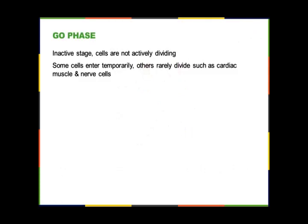G0 is an inactive stage for cells that are not actively dividing. Some cells enter G0 temporarily, while others rarely divide — such as cardiac muscle cells and nerve cells. If you get injuries to those types of cells, healing or repair is much less likely than in other places. For example, skin cells are always dividing so a cut heals easily, whereas a cut nerve is not necessarily going to heal.